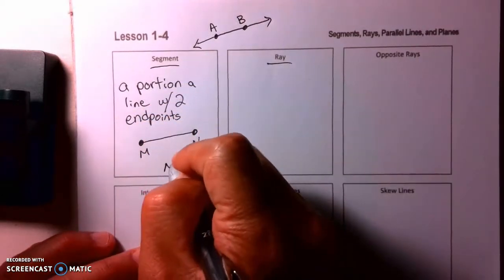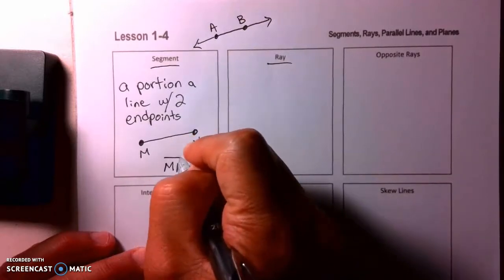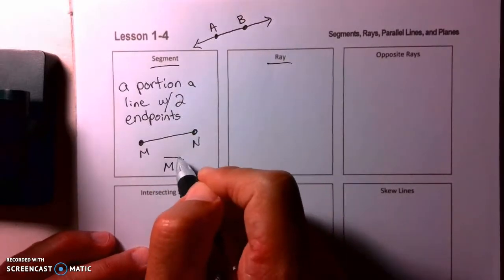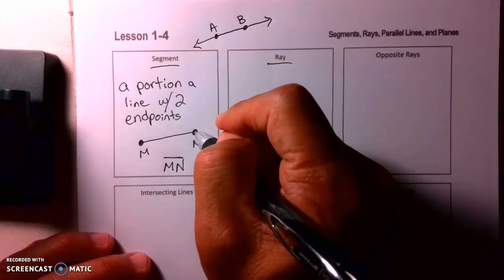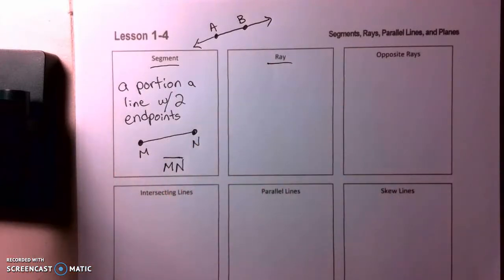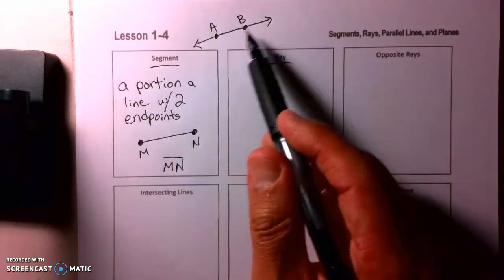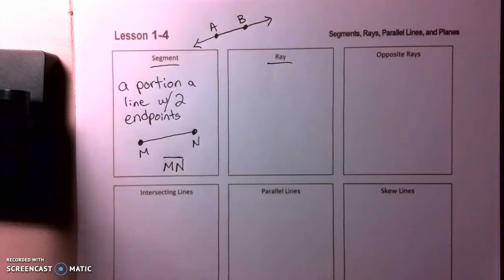We would denote this with M to N, and then just a straight bar, no arrows. So this is called a segment. It can be measured. You can take a ruler and actually measure it. Now lines, technically, in geometry where lines go on forever, you can't measure something that goes on forever.